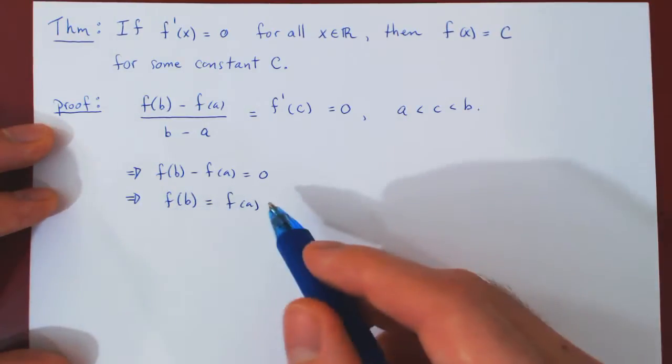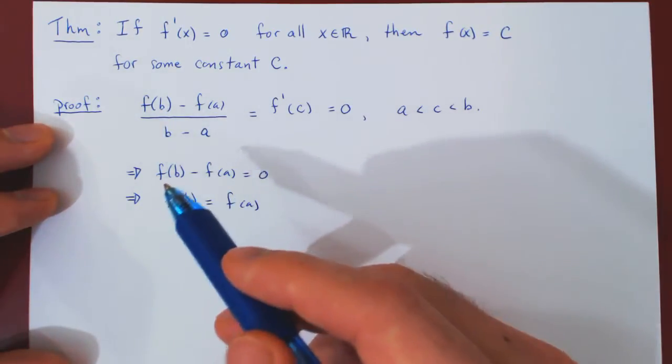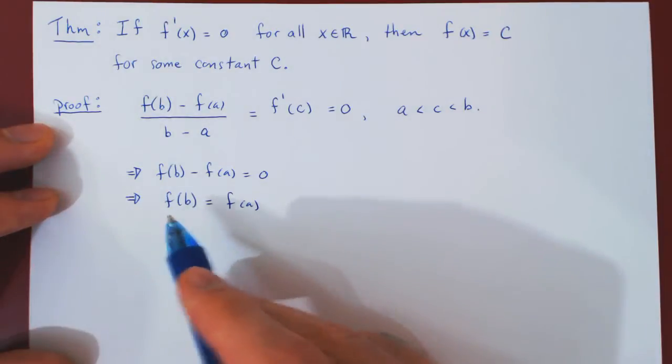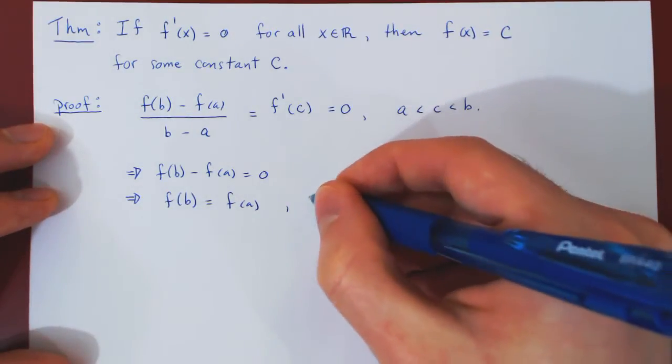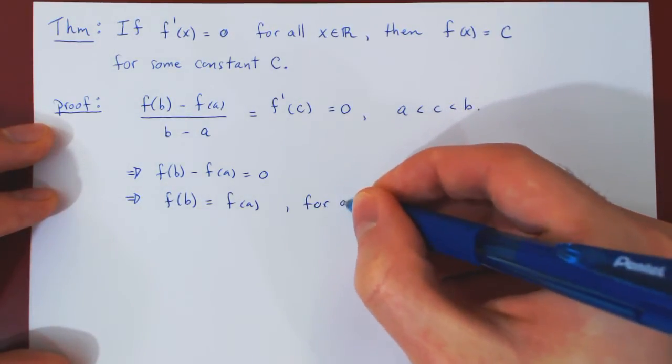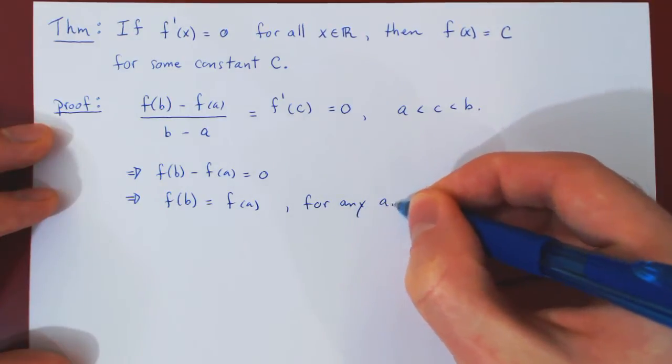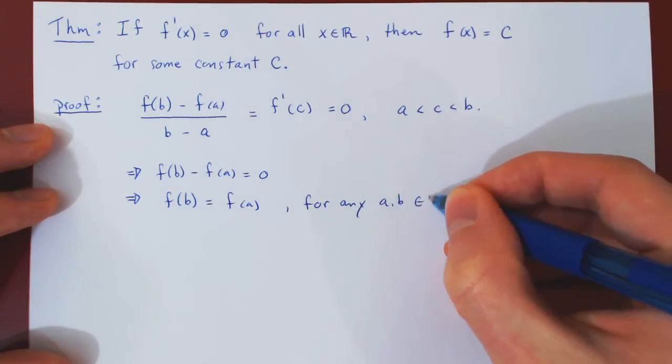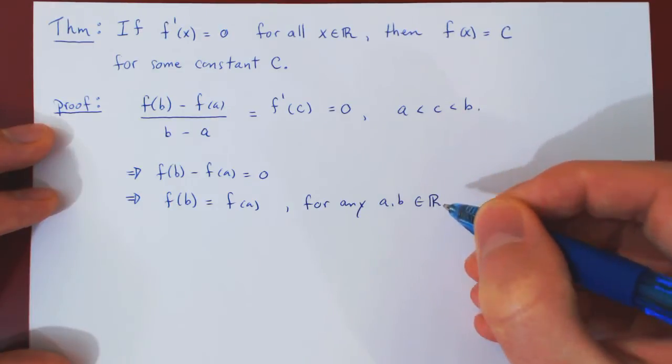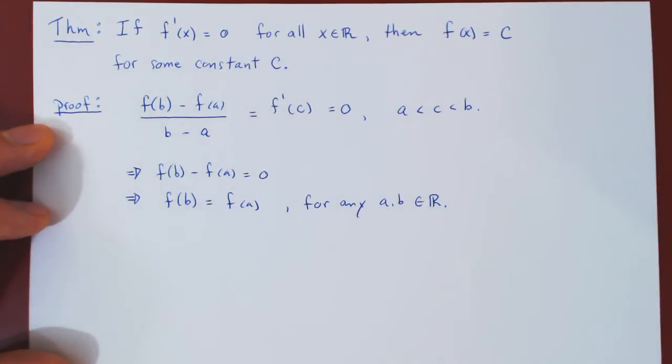But think about why this is interesting. The choice of a and b was arbitrary. So f of b equals f of a for any choice of a and b. And if you think about it, this completes the proof.